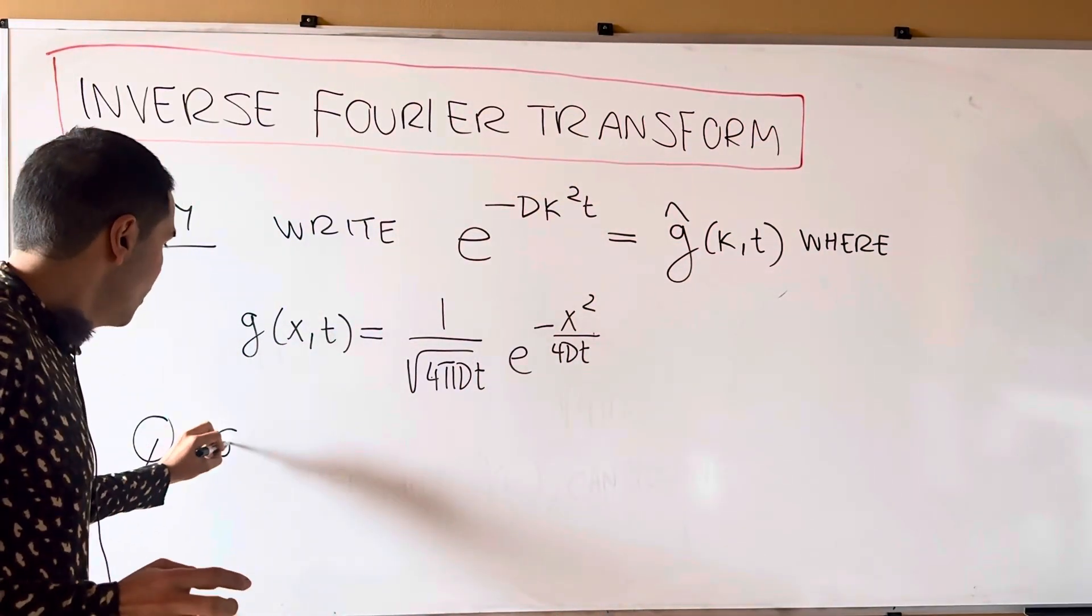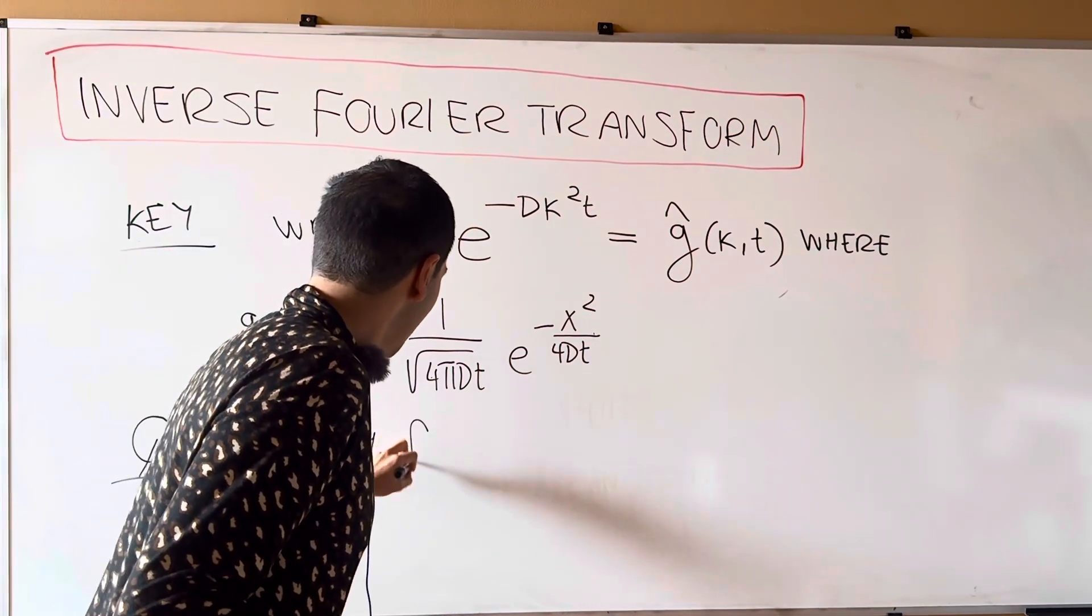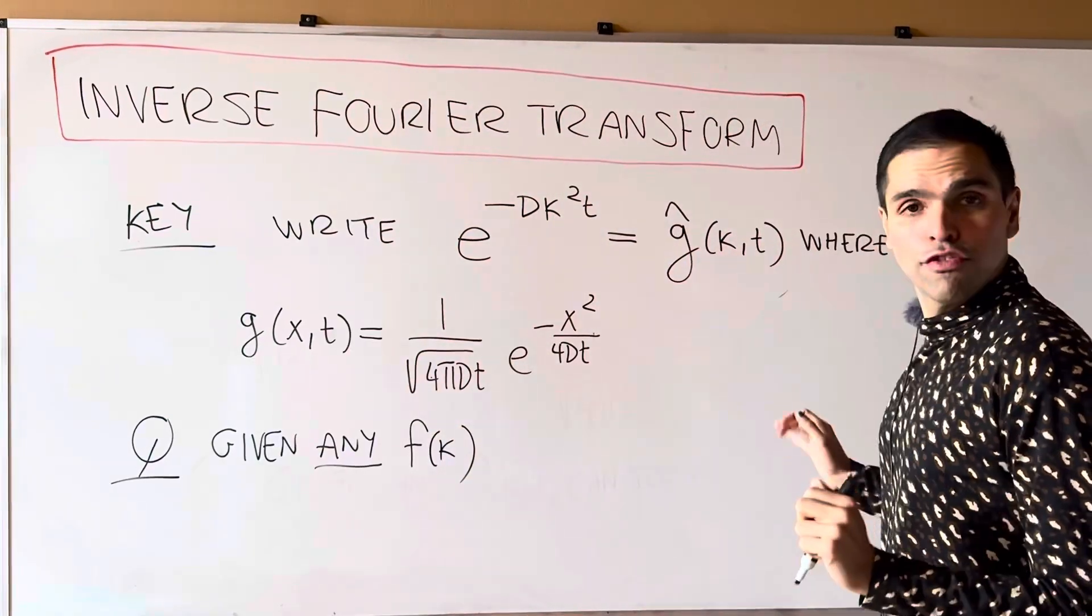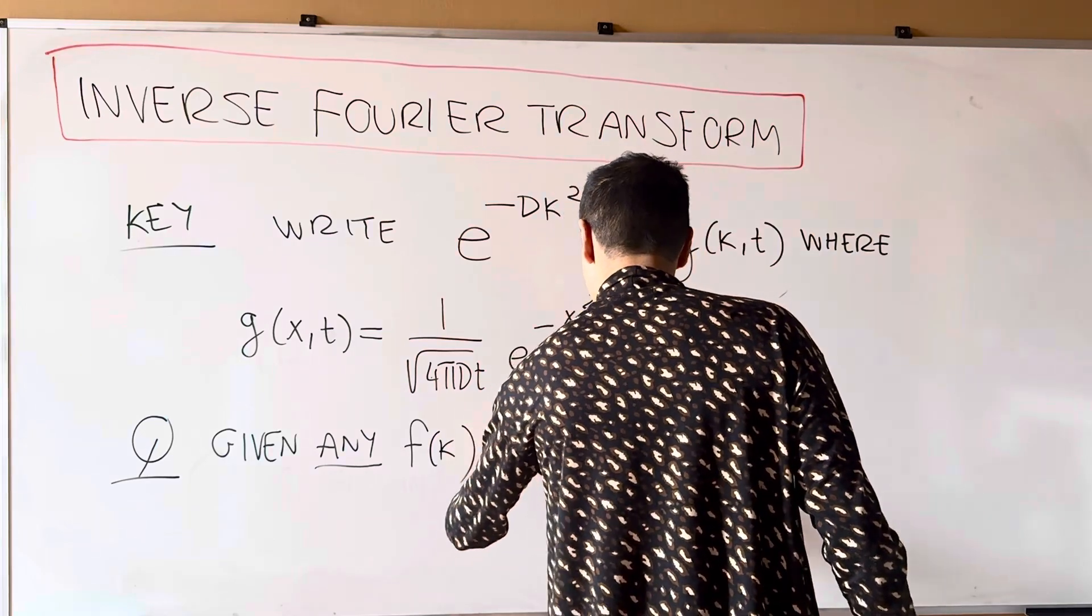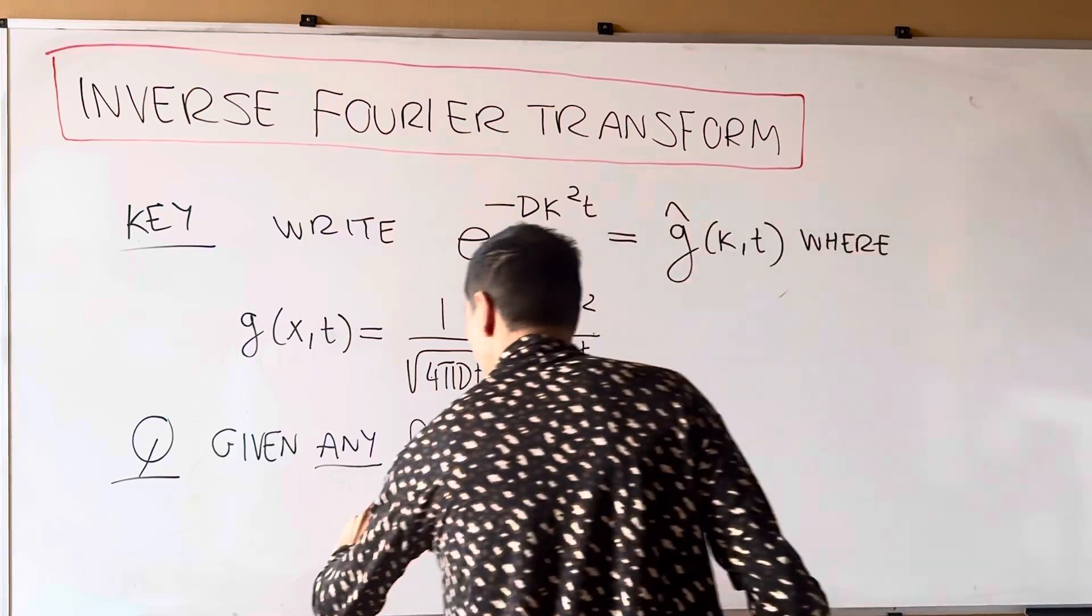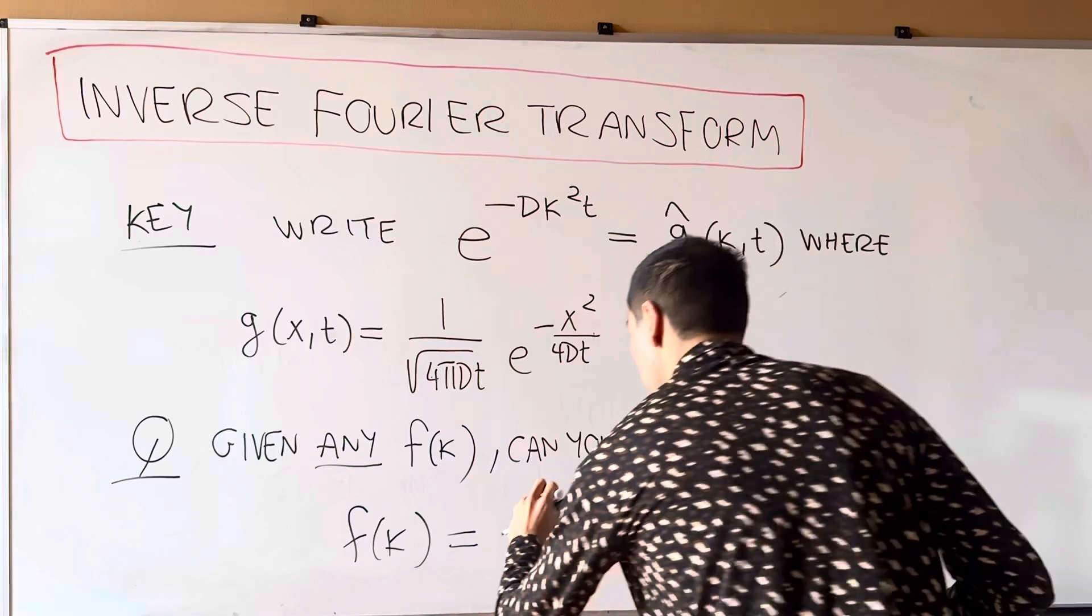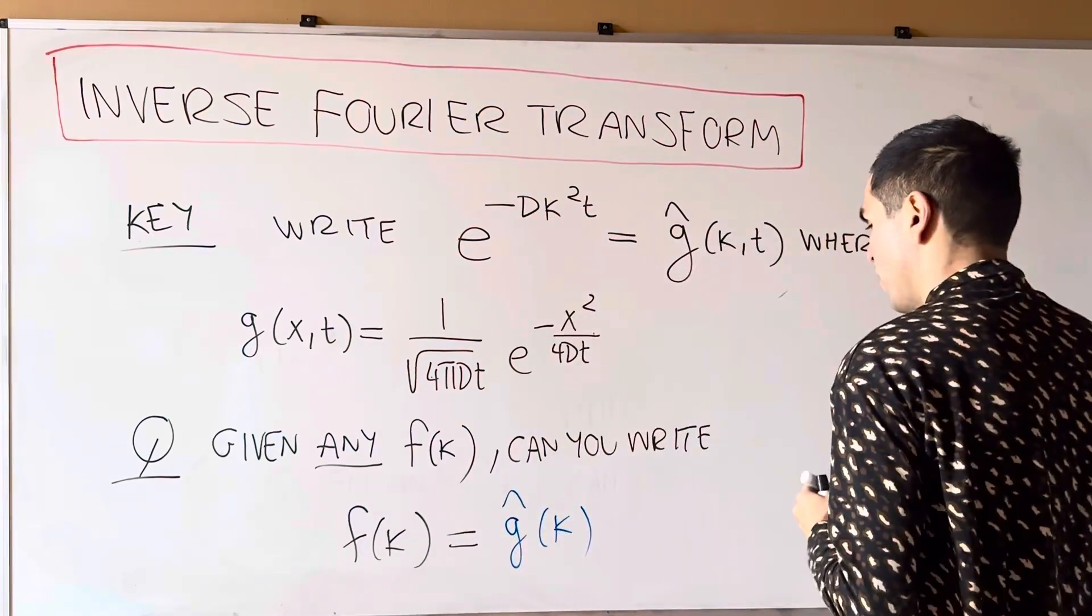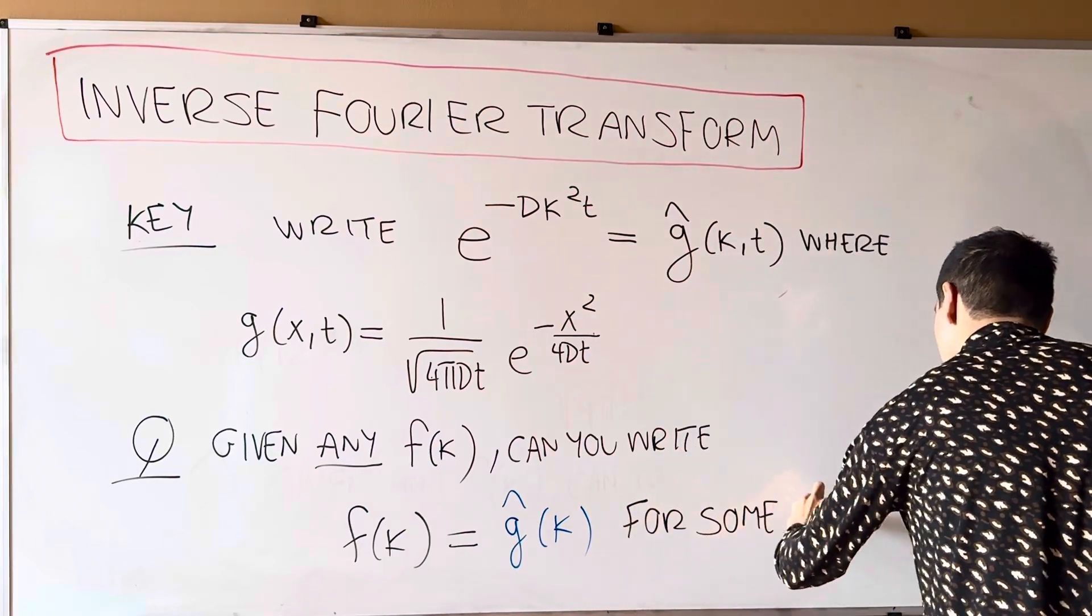In other words, given any f, f of kappa, can you write f as the Fourier transform of some other function g? So can you write f of kappa as the Fourier transform of some function g for some g?